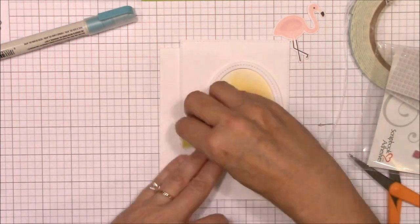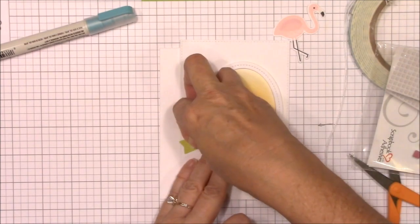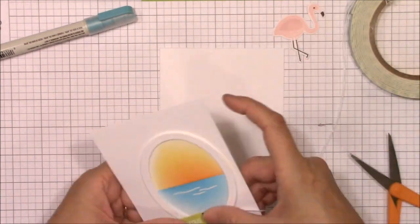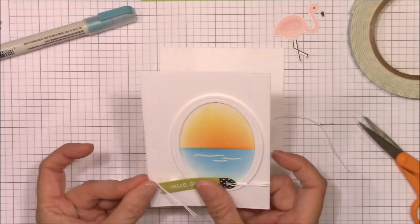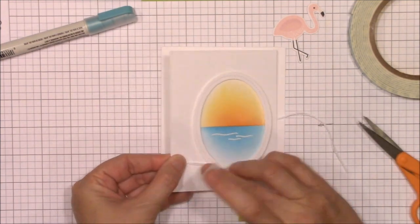I've added some foam squares to the back of the tag but I'm not quite ready to adhere it to the image panel just yet. I'm wrapping the crochet thread around the back of the image panel to the front and I adhere the ends with some scotch tape.